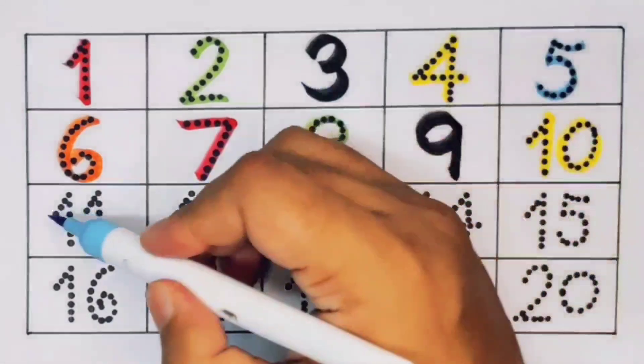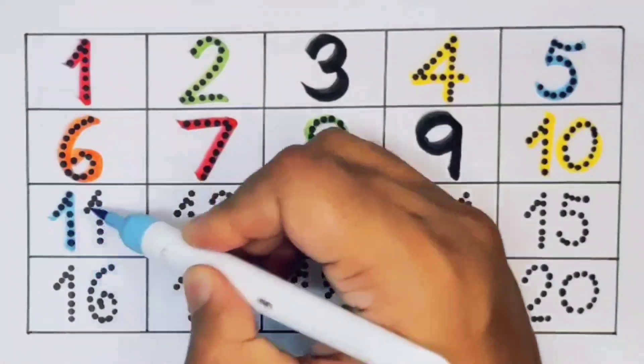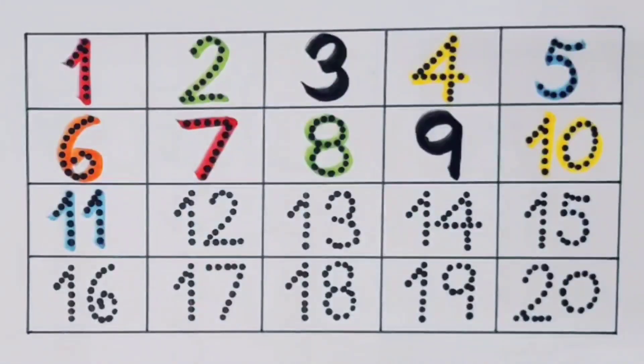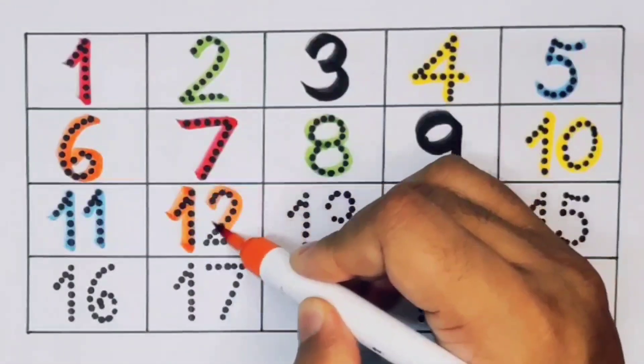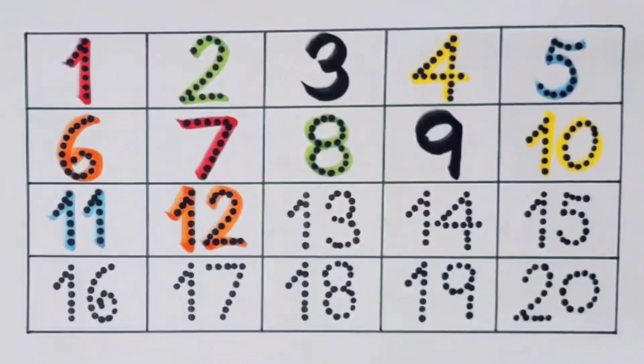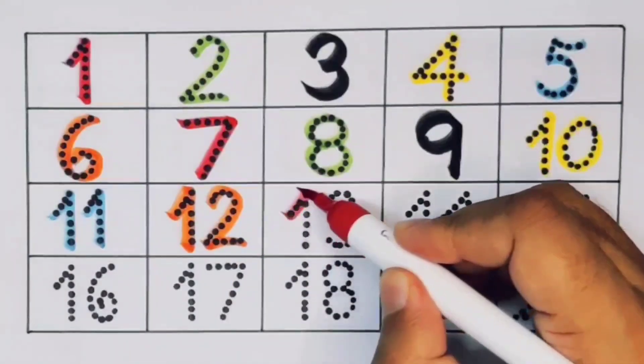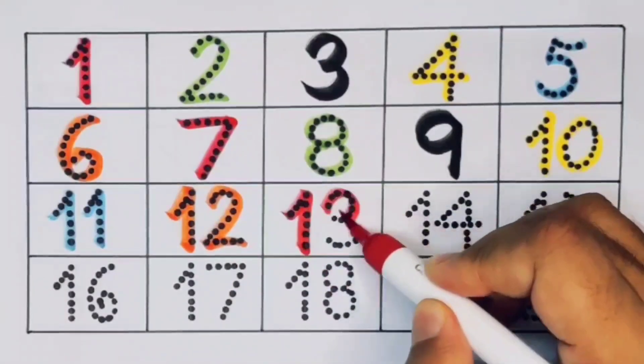Next kids 11. 1. 1. 11. Number 11. Next kids 12. 1. 2. 12. Number 12. Next kids 13. 1. 3. 13. Number 13.